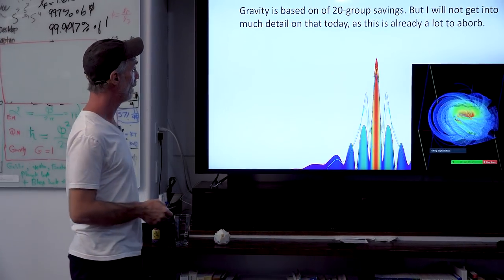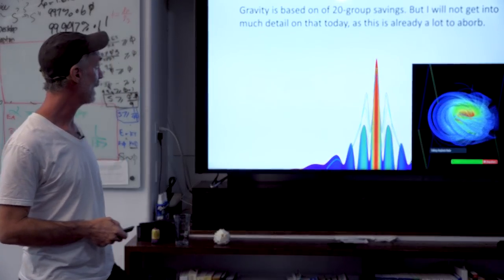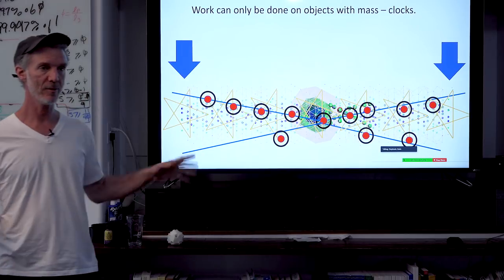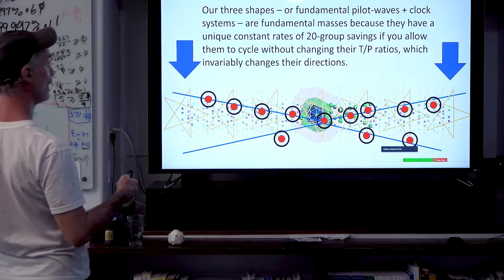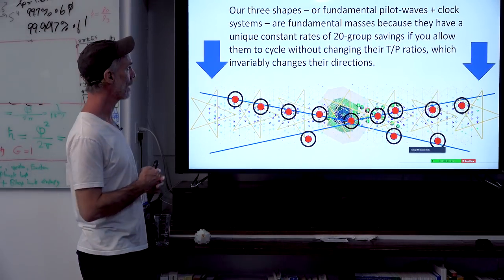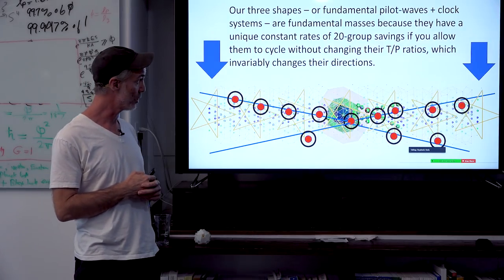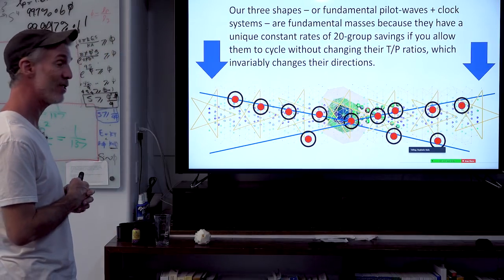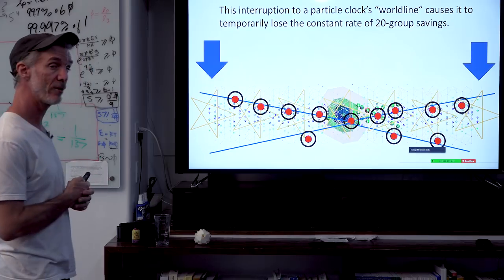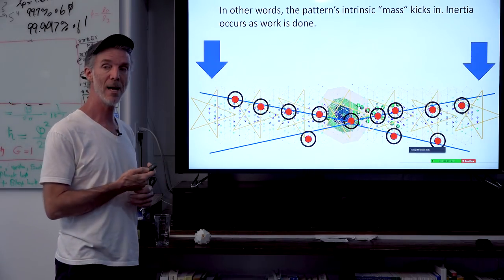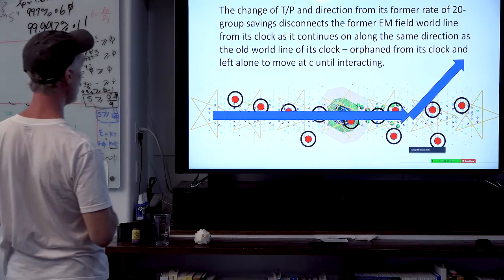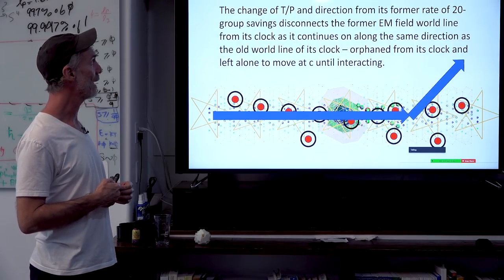Gravity is based on 20-group savings. Work can only be done on objects with mass — clocks. Our three shapes, or fundamental pilot waves plus clock systems, are what I could call fundamental masses, because they each have different unique constant rates of 20-group savings, if you allow them to cycle without changing their T over P ratios, which invariably changes their directions. This interruption to a particle clock's world line causes it to temporarily lose its constant rate of 20-group savings. In other words, the pattern's intrinsic mass will kick in — inertia will occur as work is being done.